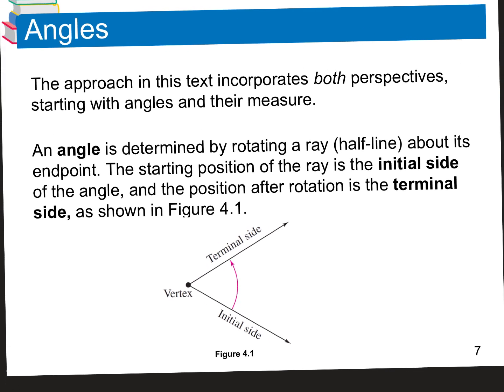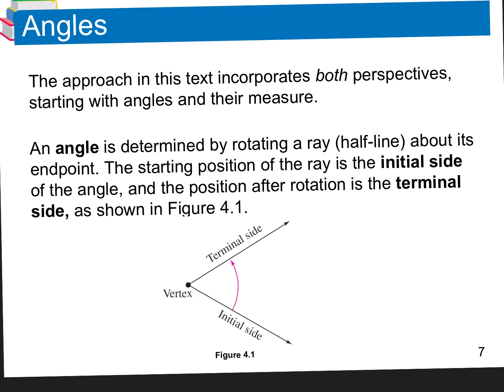When I look at an angle, you guys are all familiar with what an angle is. An angle is determined by rotating a ray, which is a half line, about its endpoint. Your starting position of the ray is the initial side; the ending position is the terminal side. Initial is where something starts, and the terminal is where it ends. They're joined at the vertex — it's like the corner, the point.